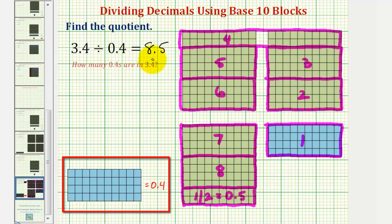To emphasize this, let's also write the corresponding multiplication problem, which would be 8.5 times 0.4 equals 3.4. Eight and a half copies of 0.4 is equal to 3.4.